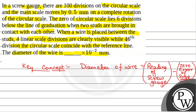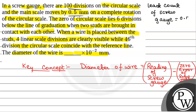Now, first we will calculate the least count of the screw gauge. The least count of the screw gauge will be equal to — since there are 100 divisions and the main scale moves by 0.5 mm on complete rotation — least count = 0.5 / 100 mm = 5/1000 mm = 1/200 mm. So this will be the least count of the screw gauge.